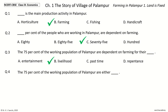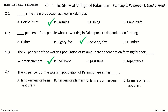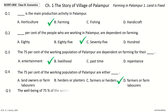Question 4: The 75 percent of the working population of Palampur are either Dash. The options are Landowners or Farm Laborers, Herders or Planters, Farmers or Herders, Farmers or Farm Laborers. Your time to choose. And the answer is Farmers or Farm Laborers. So, 75 percent of the working population of Palampur are either Farmers or Farm Laborers.